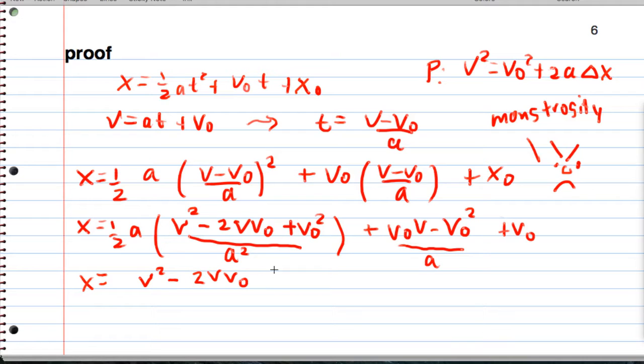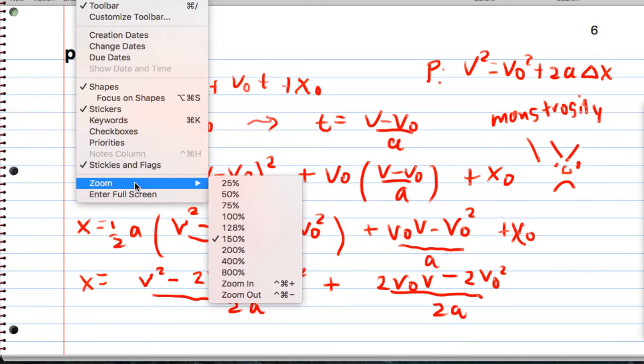And I'm going to do a little fractiony thing here. I'm going to multiply top and bottom by, I'm sorry, this should be excellent at the end, by 2, so that I have 2v naught v minus 2v naught squared, all over 2a, so that I can combine fractions.